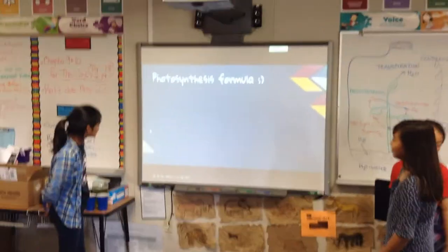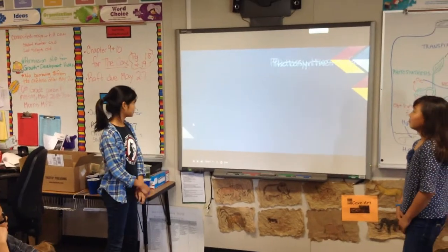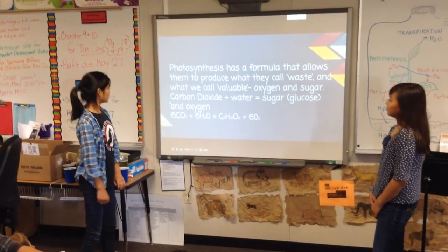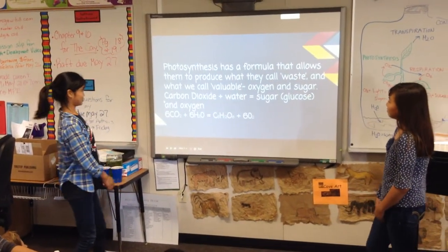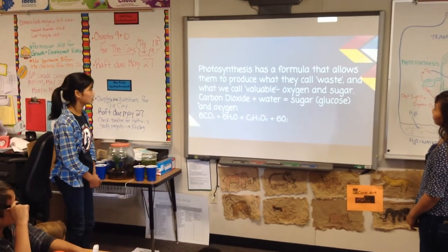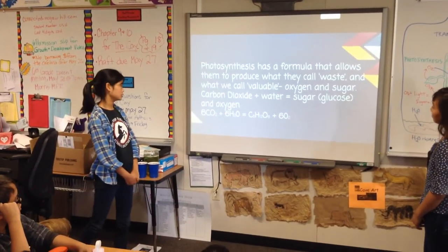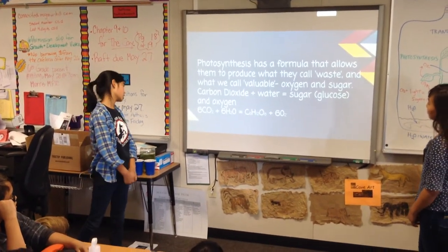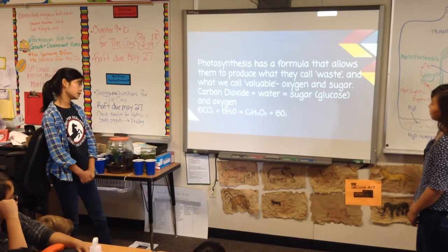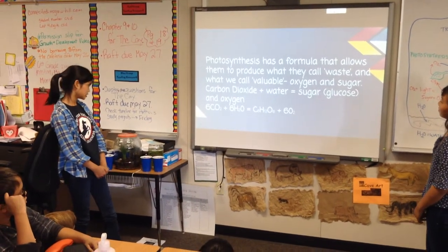Photosynthesis has a formula. It allows plants to produce what they call waste and what they call valuable: oxygen and sugar. The formula is: carbon dioxide plus water equals sugar or glucose and oxygen.